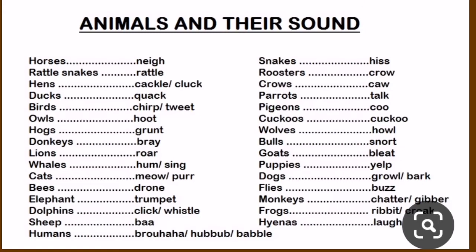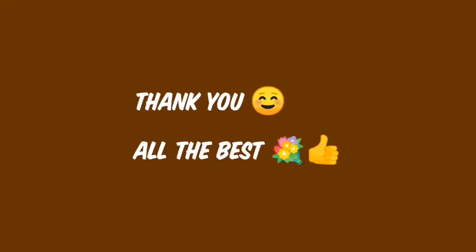And next, animal sounds. A cow makes the sound 'moo,' a cat makes the sound 'meow,' a dog barks — and like that, we just read all the animal sounds. Thank you, all the best!